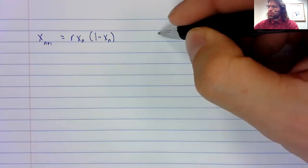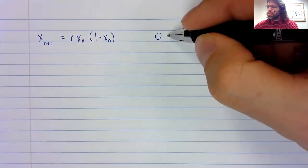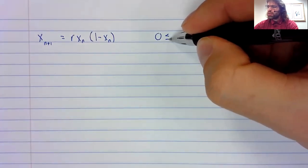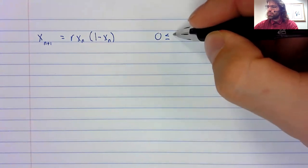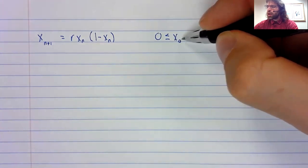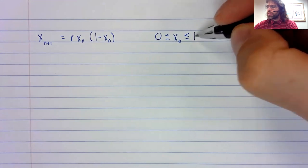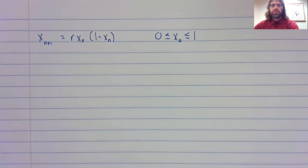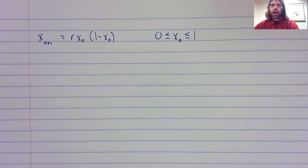We are going to assume that x sub zero, that our starting value, is between zero and one.